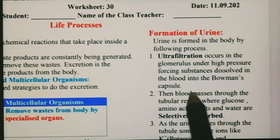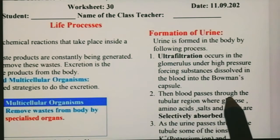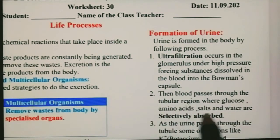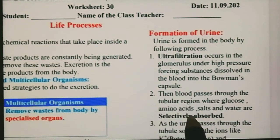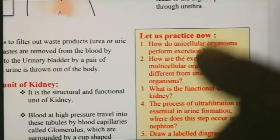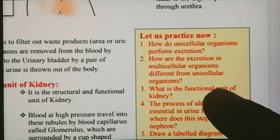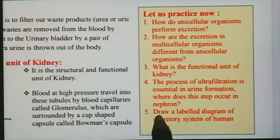यह जरूरी क्यों है? Because then the blood passes through the tubular region where glucose, amino acids, salts and water are selectively absorbed. क्योंकि खाली वह निकालना है जो waste है, बाकी जो चाहिए वह वापस body के अंदर ले लेना है — इसीलिए ultrafiltration और selective reabsorption दोनों जरूरी हैं।